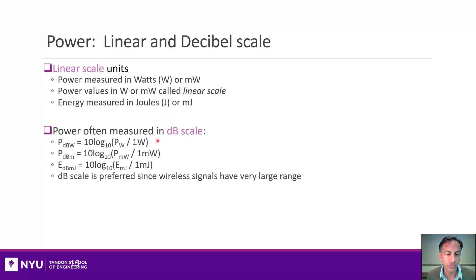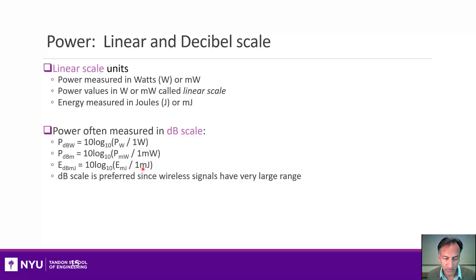Wireless engineers prefer to think about these things in dB scale. You might see power in dBW — the power in watts divided by one watt, then take 10 log base 10. Or dBm, which is the power in milliwatts. Similarly, dBmJ is the energy divided by one millijoule. The reason is that wireless signals have a very large range of possible values, and carrying around the exponents in linear scale becomes unwieldy. dB scale is much easier to handle.